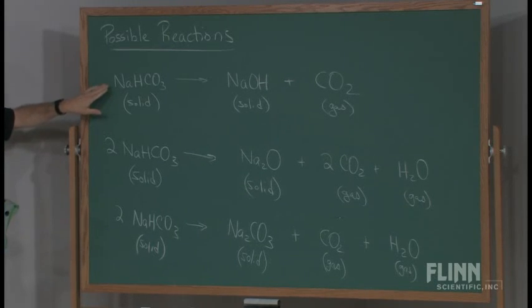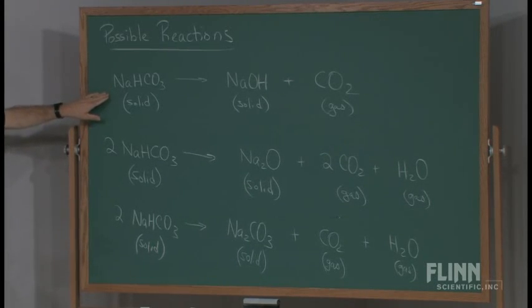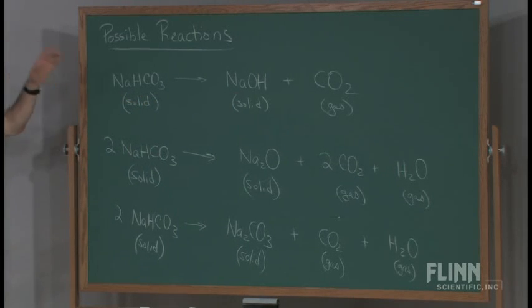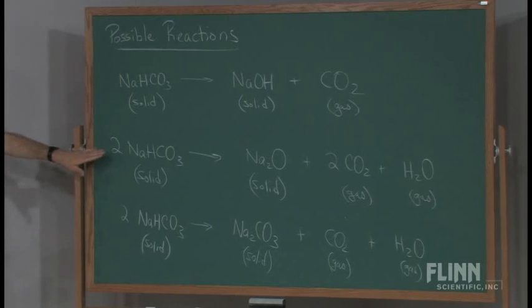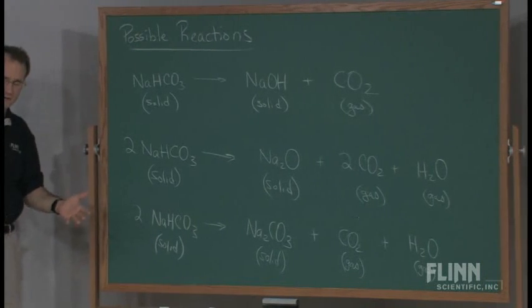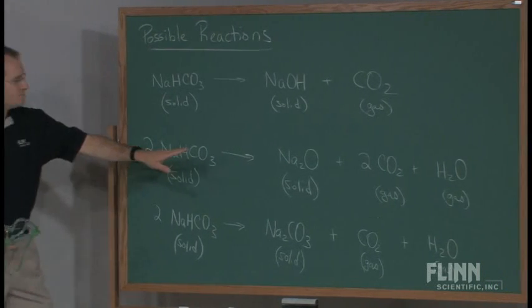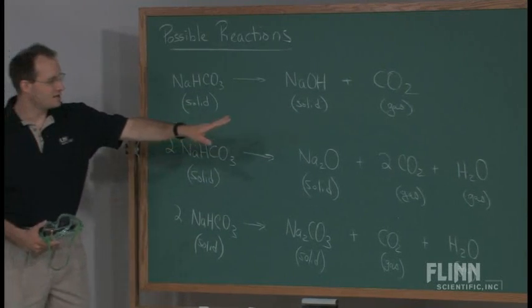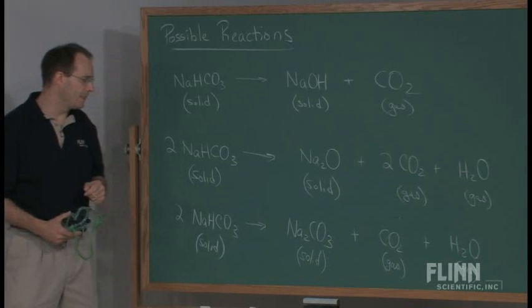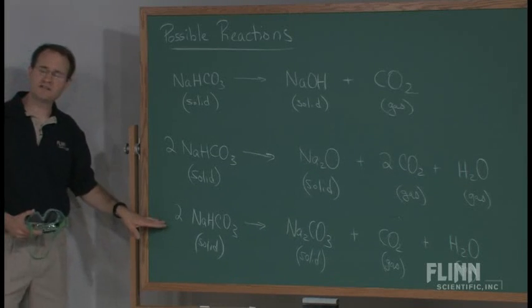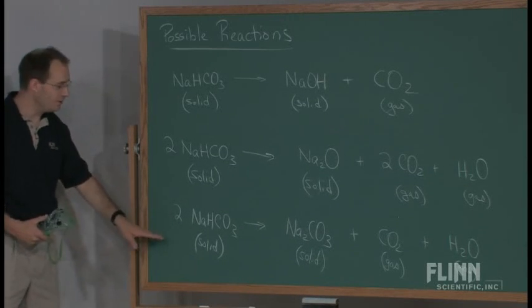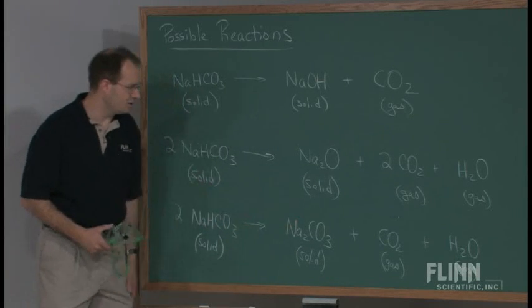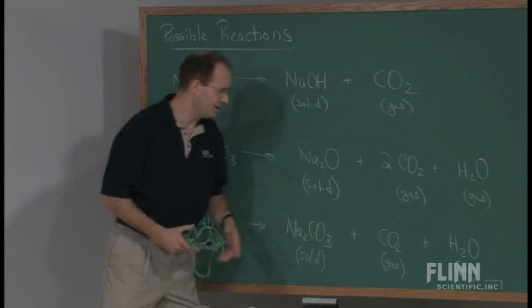There are three possible decomposition reactions that could be occurring inside the crucible or the test tube at this point. One would have the baking soda, the sodium bicarbonate, decomposing to produce sodium hydroxide and releasing carbon dioxide gas. A second possible reaction would have the baking soda producing sodium oxide as well as carbon dioxide and water vapor. The last possible equation which could be occurring would have us starting with our baking soda and producing sodium carbonate along with carbon dioxide and water vapor.